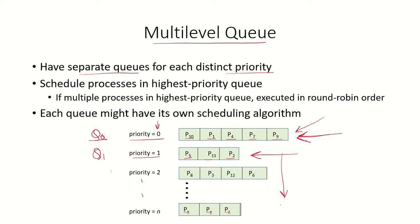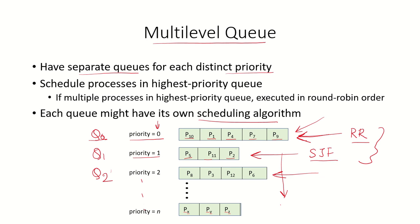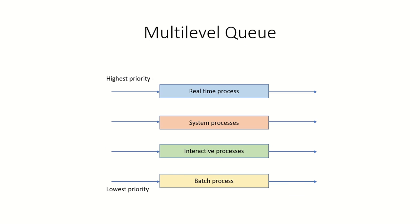Once Q0 and Q1 processes are scheduled, processes in Q2 will be scheduled. Each queue may have its own scheduling algorithm — for example, Q0 might use the round robin scheduling algorithm and Q1 might use the shortest job first scheduling algorithm. So each ready queue can have its own scheduling algorithm. These algorithms have been discussed in earlier videos.